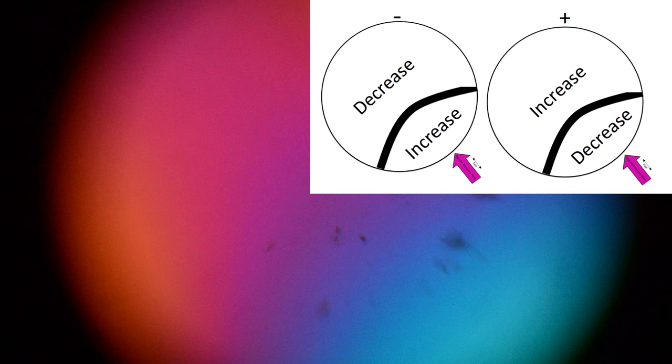What is the optic sign of this mineral? If you said biaxial negative, you are correct. The area under the curve of the isogyre exhibits an increase in interference colors, and the area outside of the curve exhibits less of an increase.